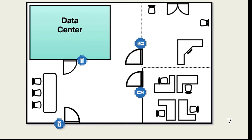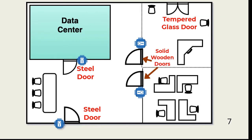Doors are our next topic. As with any barrier, the structure of the door is an important consideration. In our example building, the back door, as part of the exterior wall security, should be strong. A hollow wooden door, for example, is not a good barrier at this location. Instead, a steel door is a better solution. Doors into offices require structural considerations based on the associated risk.